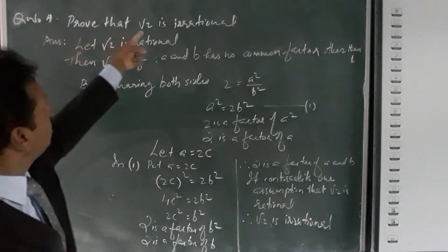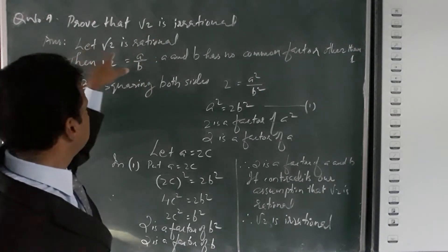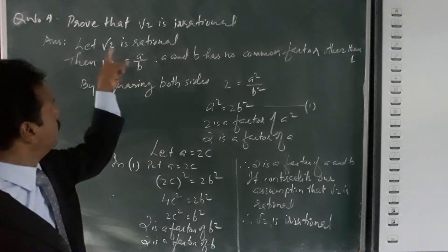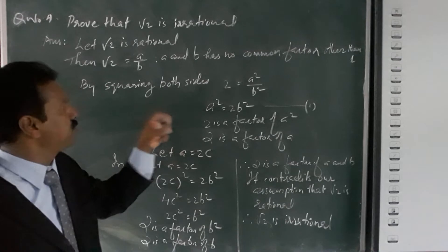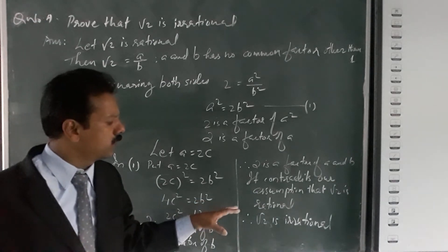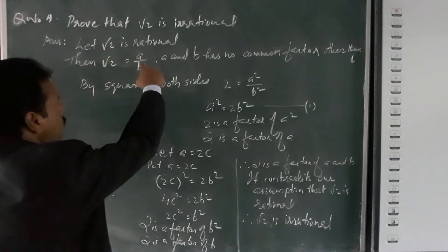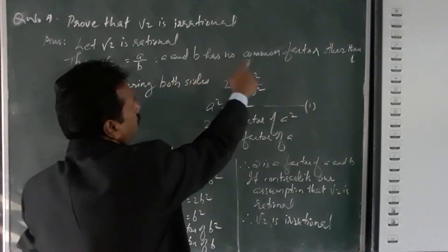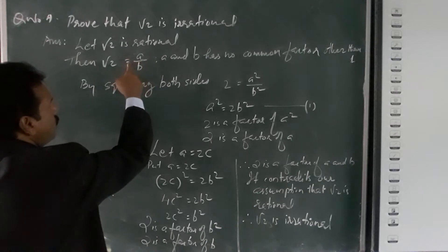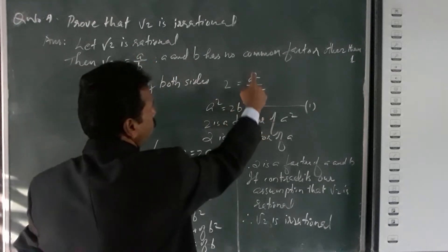Question number four: prove that √2 is irrational. We know √2 is irrational but we have to prove it. We use proof by contradiction. We assume that √2 is rational, so √2 = a/b where a and b have no common factor other than 1 (co-prime). Squaring both sides: 2 = a²/b², so a² = 2b², meaning 2 is a factor of a².